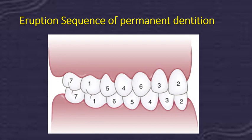This sequence of eruption of permanent teeth plays an important role when considering serial extraction procedures. Serial extraction is needed when there is crowding in the teeth, to provide enough space to relieve that crowding. Any change in the eruption sequence may be a sign of abnormal development, as disturbances in growth can cause delay or acceleration in eruption timing.